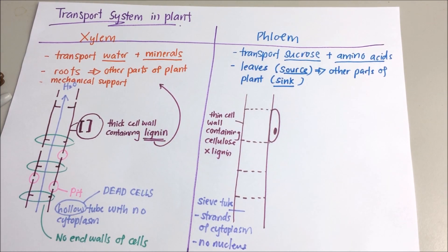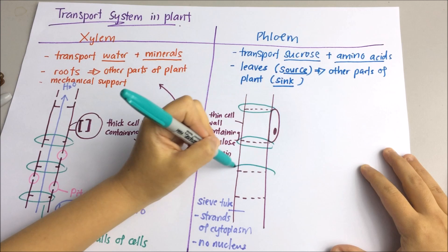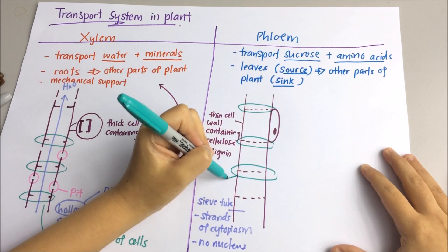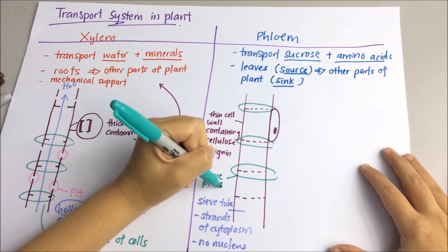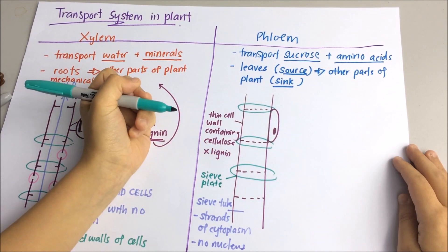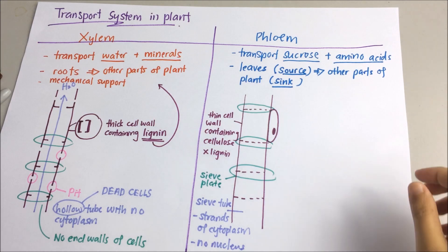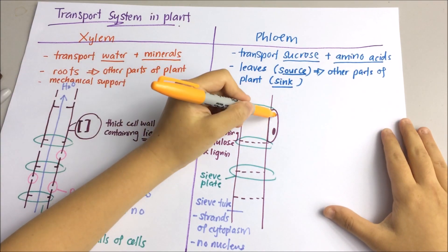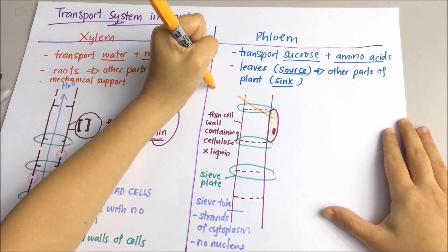The end walls of the cells that make up the phloem tissue are perforated by pores, and this structure is known as sieve plates. The sieve plates help the transport of materials from cell to cell.